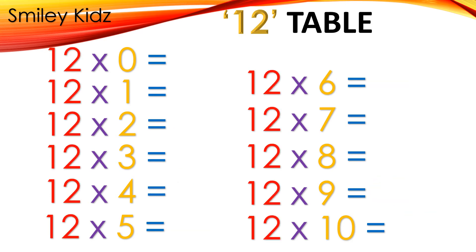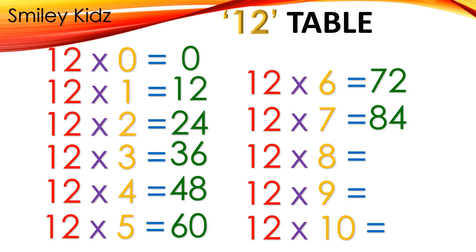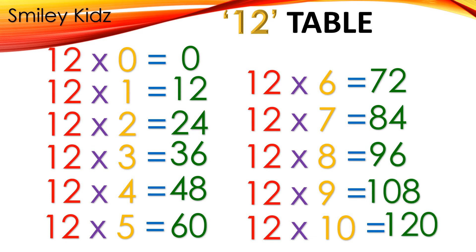Table 12: 12×0=0, 12×1=12, 12×2=24, 12×3=36, 12×4=48, 12×5=60, 12×6=72, 12×7=84, 12×8=96, 12×9=108, 12×10=120.